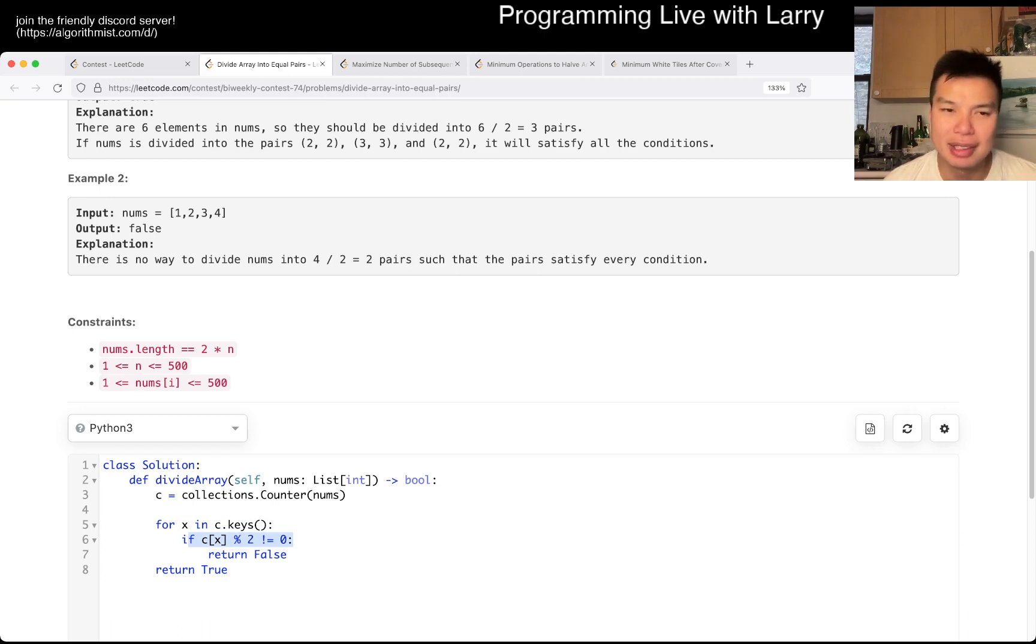If there's an odd number, then you cannot pair them - there's no pairing for them and they get a little bit lonely and sad and you return false. Otherwise, it's true. That's pretty much it.